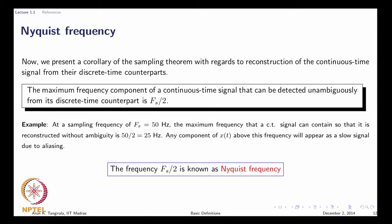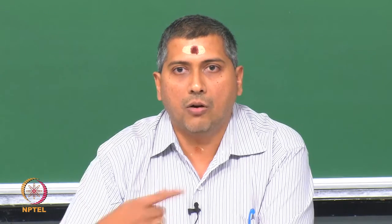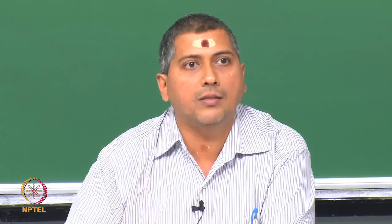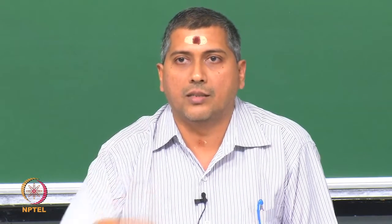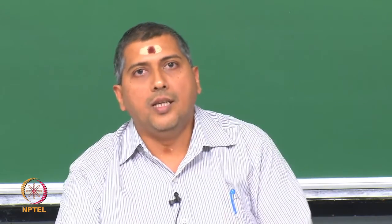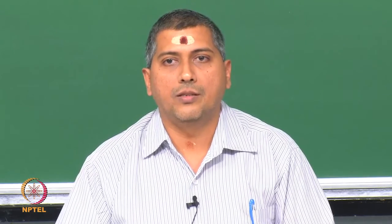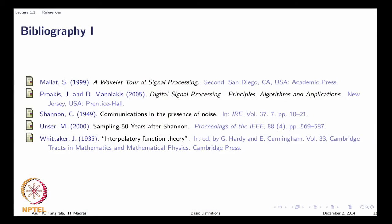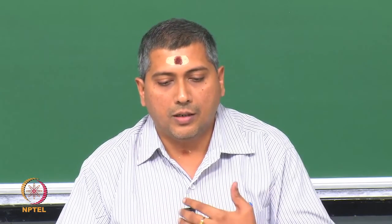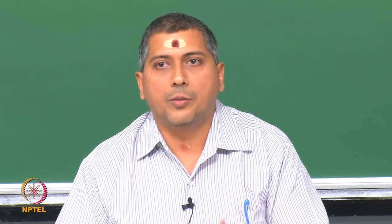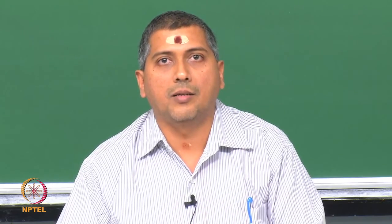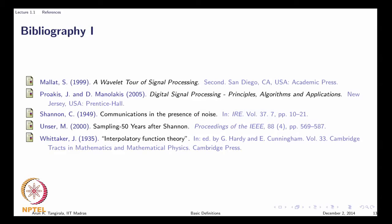Finally, the Nyquist frequency is a corollary of the sampling theorem. Given the sampling frequency, the maximum frequency that can be recovered unambiguously is half the sampling frequency — this is the Nyquist frequency. With this, we conclude the module where we have learned the concepts of deterministic and stochastic signals, periodic continuous time and discrete time signals, and the sampling theorem. In the next module, we will learn about auto-covariance functions for deterministic signals, as well as energy and power densities and energy and power signals. Thank you.